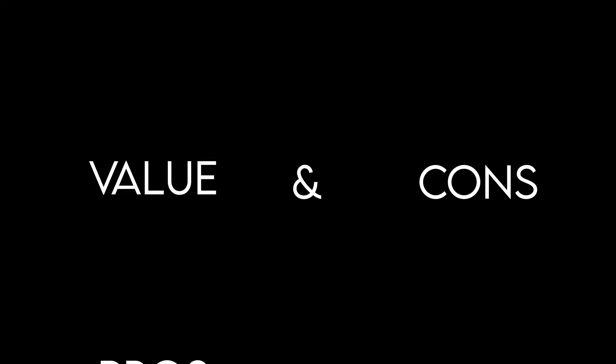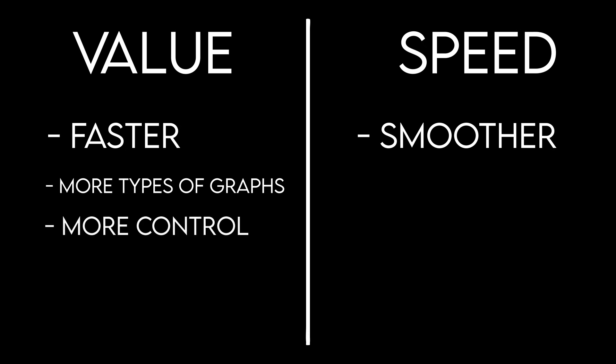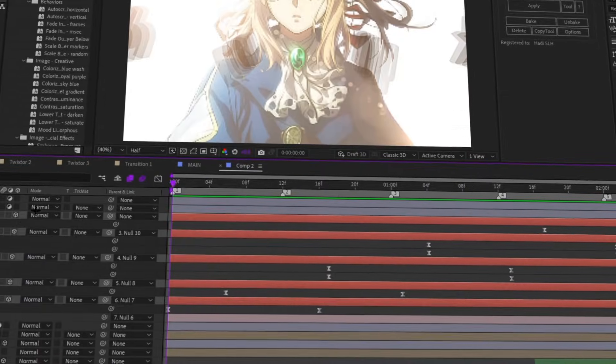First of all, the pros and cons of the value and speed graph. I personally think that the value graph makes transitions look a little bit faster, while the speed graph looks usually more smooth and a bit slower. With the value graph you have way more types of graphs you can make, much more control, and you can do everything in more detail. While the speed graph is a bit simpler and faster to just make a simple transition. I've also heard that the speed graph is a bit better for 3D camera movement in 3D scenes.